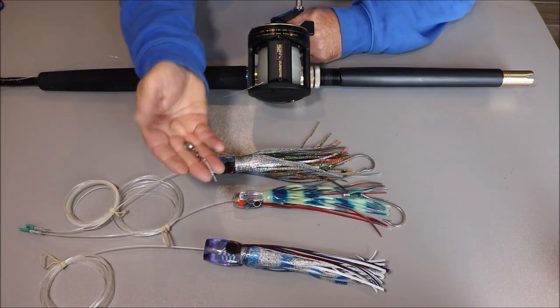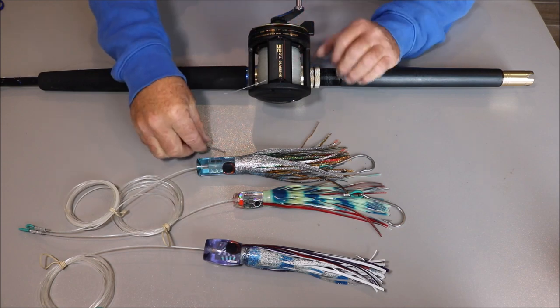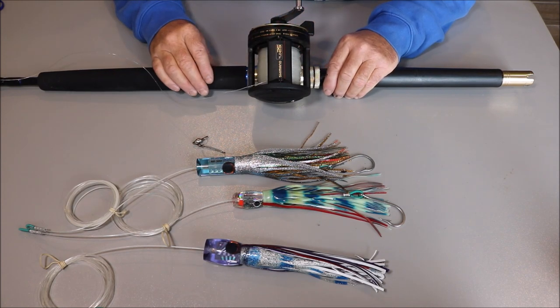And also, too, what you'll need is a snap swivel, decent snap swivel. What I want to show you today is how to tie a plaited double.